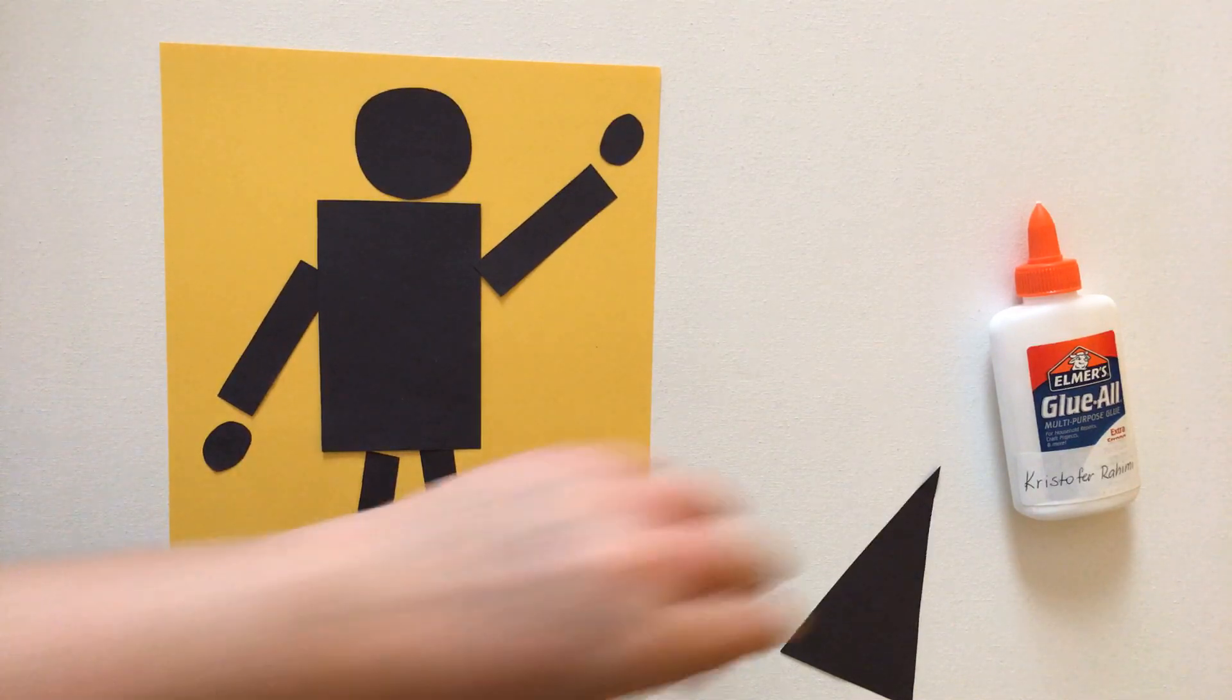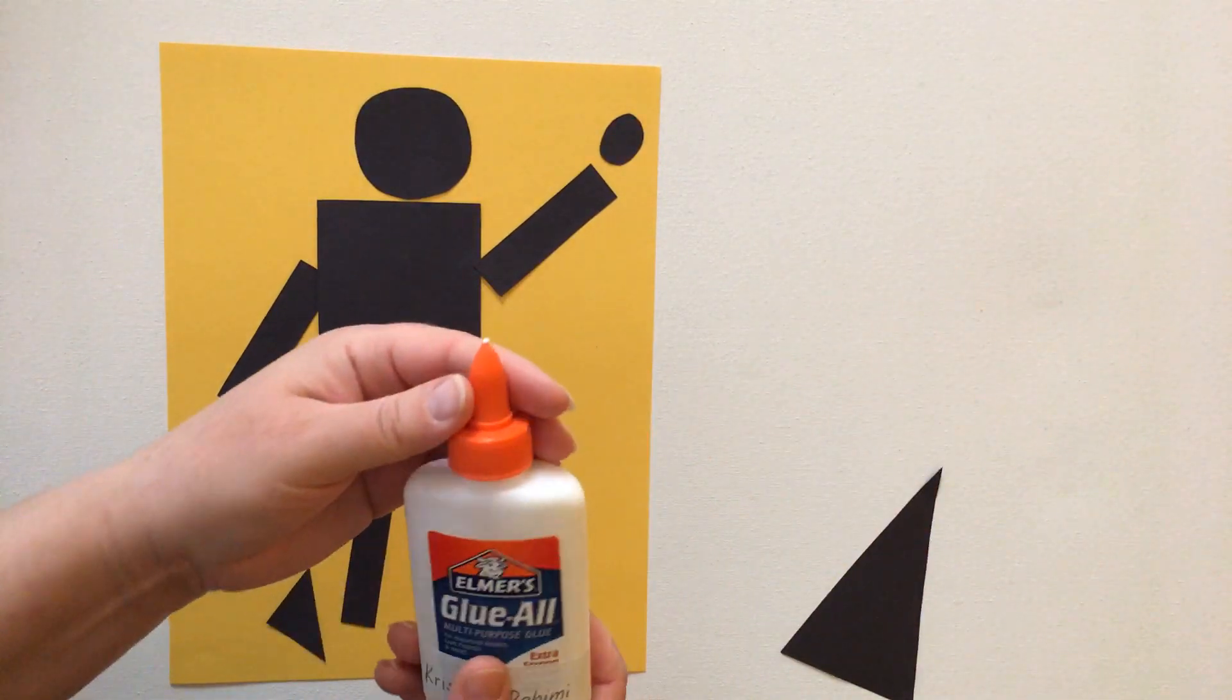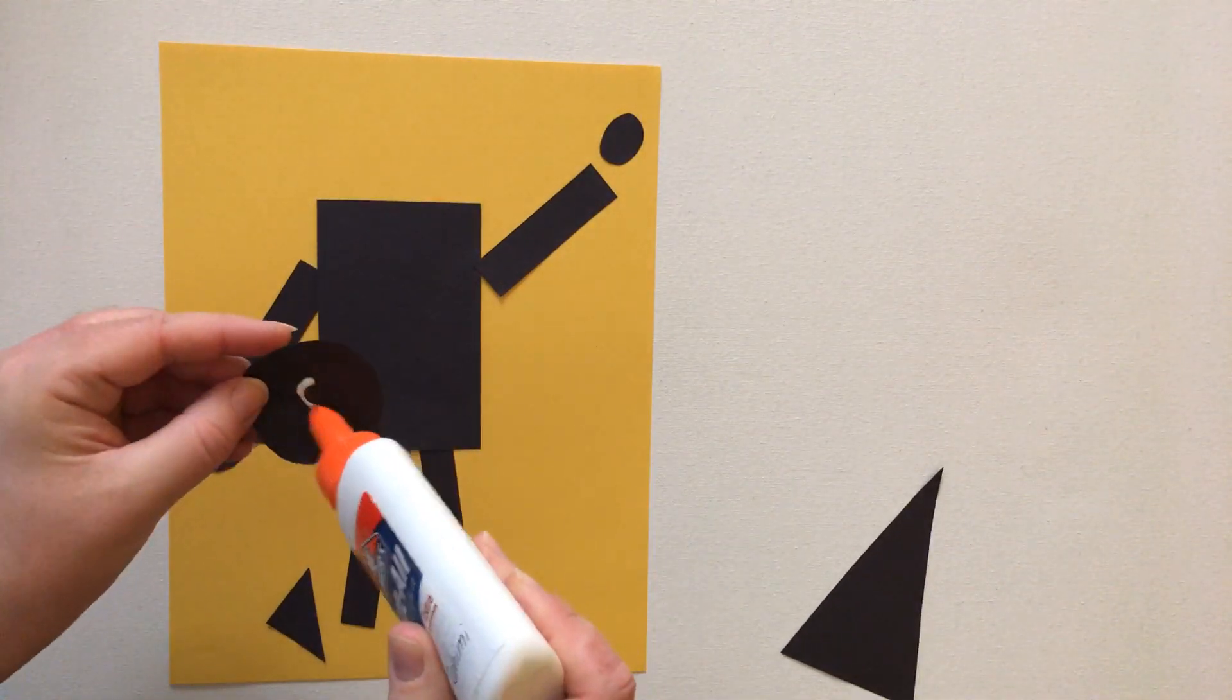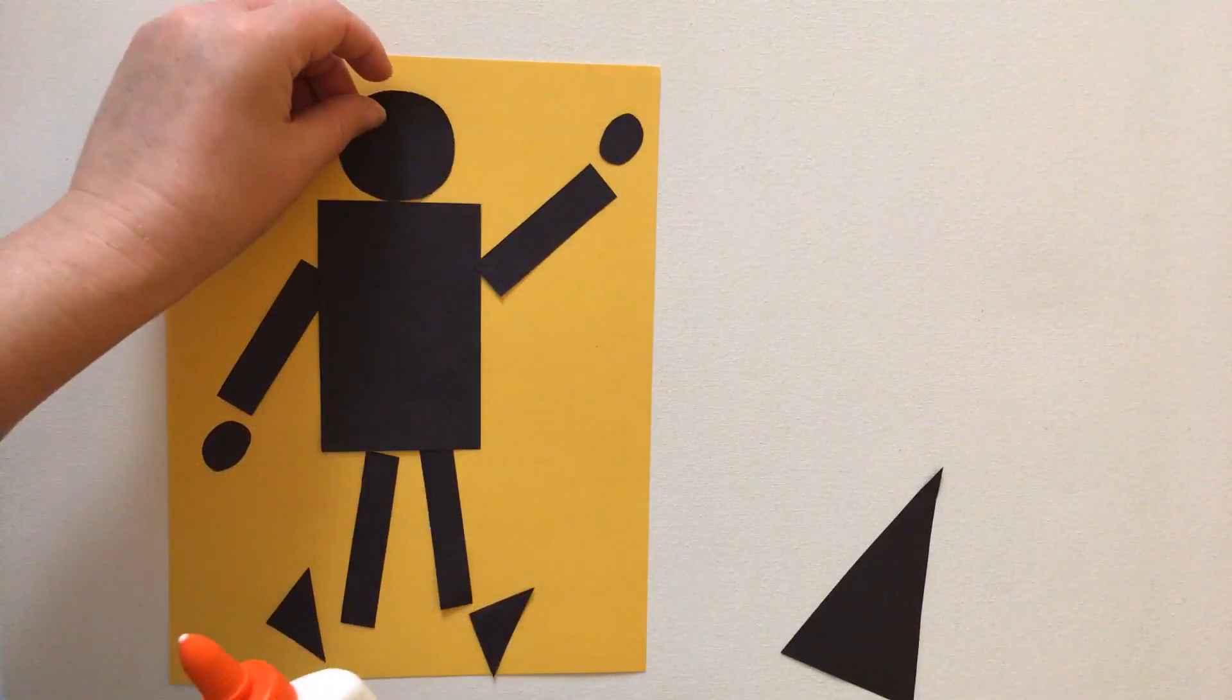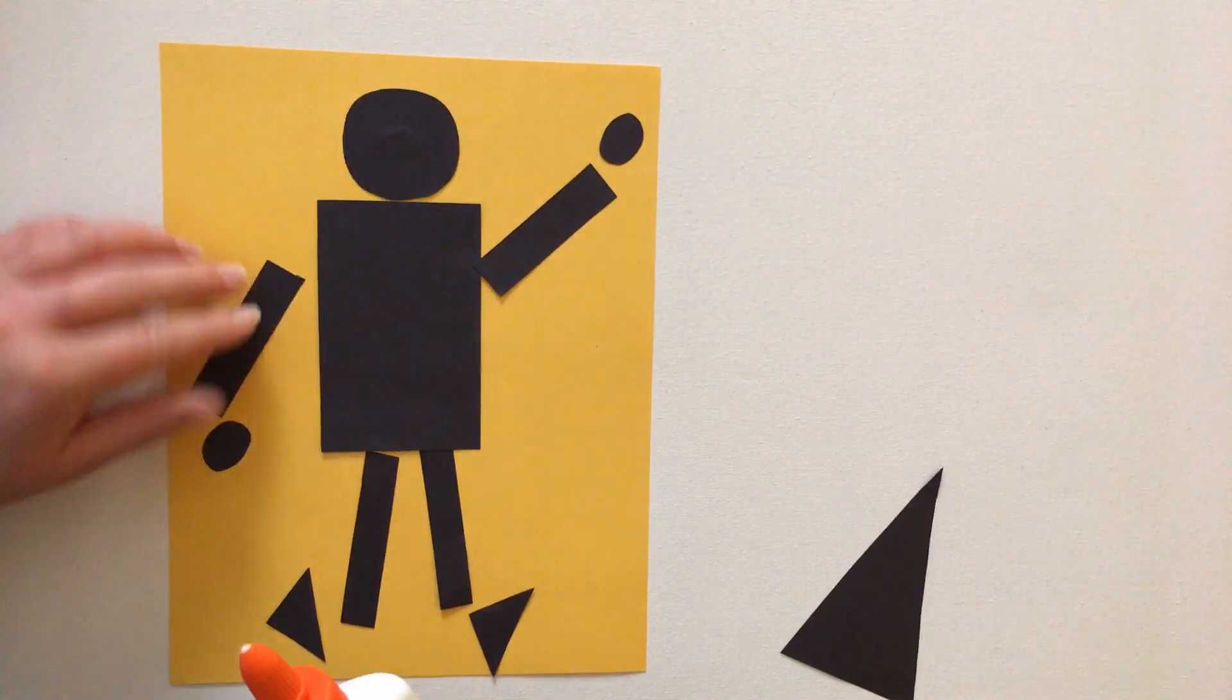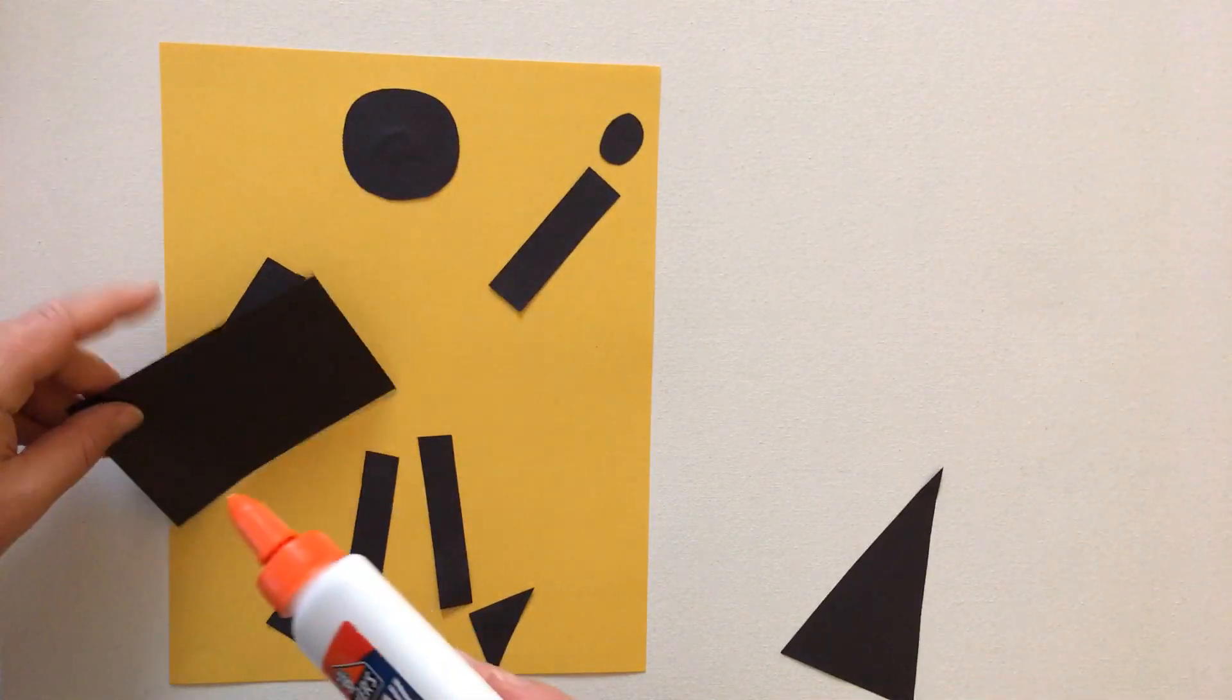Then they're gonna use the glue, and for this work really one dot does the job. As long as the paper stays in place, it's gonna be attached nicely to the paper here.